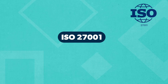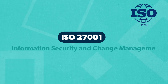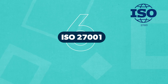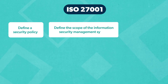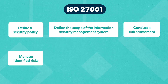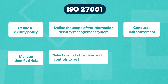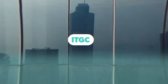The third framework is ISO. ISO 27001 is a framework related to information security and change management. ISO 27001 uses a top-down approach with six steps to attain compliance: one, define a security policy; two, define the scope of the information security management system; three, conduct a risk assessment; four, manage identified risks; five, select control objectives and controls to be implemented; and six, prepare a statement of applicability.